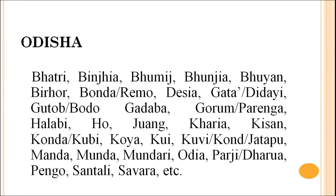In Odisha, we have Bhatri, Binjhia, Bhumij, Bhunjiya, Bhuinya, Birhore, Bonda (Remo), Desia, Gata (Didai), Guttob (Bodo Gadaba), Gorum (Paranga), Halbi, Ho, Juang, Kharia, Kisaan, Konda (Kubi), Koya, Kui, Kumi (Kondh/Jatapu), Manda, Munda, Mundari, Odia, Parji (Dhuruwa), Pengo, Santali, Savara, etc.